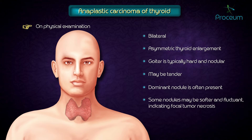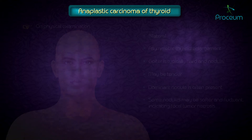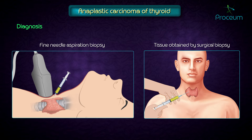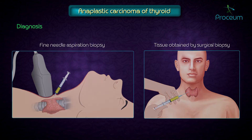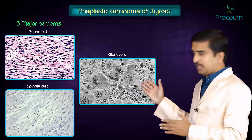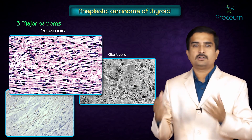The diagnosis of anaplastic cancer is usually established by cytologic examination of cells obtained by fine needle aspiration biopsy, or by tissue obtained via large needle or surgical biopsy. There are three major histological patterns: squamoid, spindle cells, and giant cells.